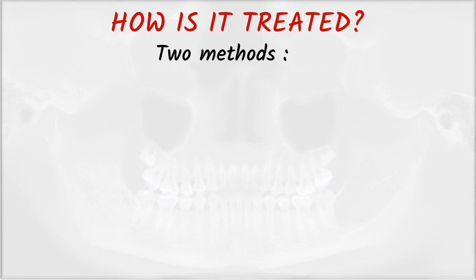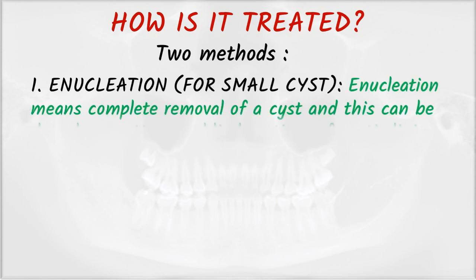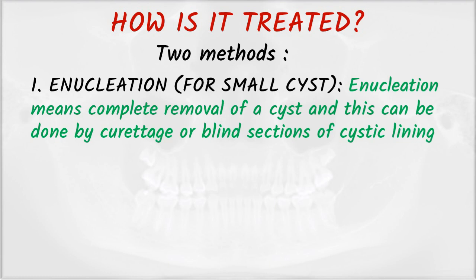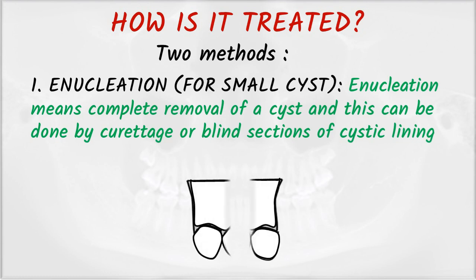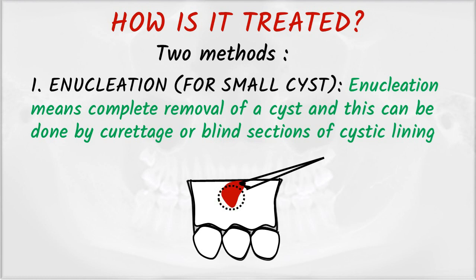How is it treated? We have two methods. The first is enucleation, used for small cysts, where complete removal of the cyst is done by curettage or blind section of the cystic lining. First remove the bone over the cyst, then once the cyst is visible, remove it completely. This is enucleation.